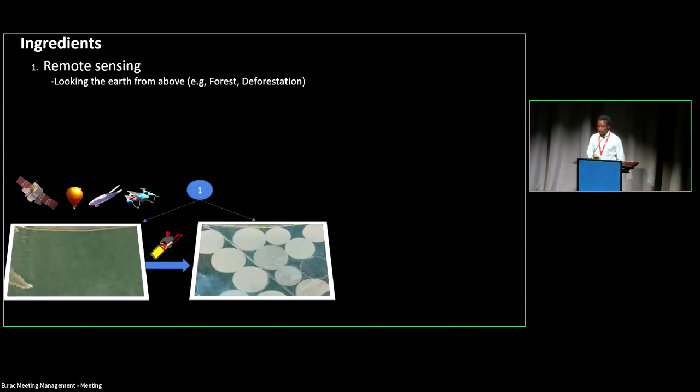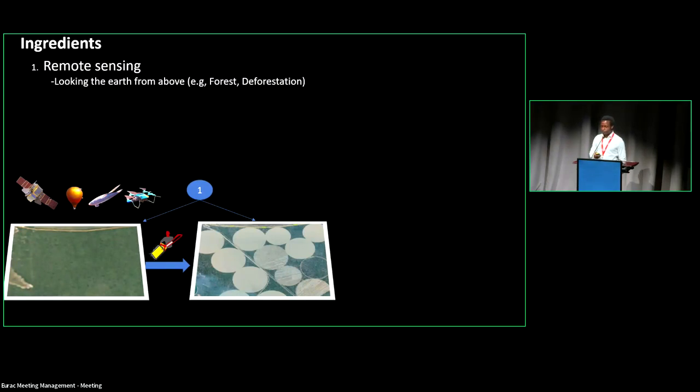Remote sensing from this perspective means looking at the earth from above, of course, can be either by the use of satellite, a balloon, airplane, or drones. From remote sensing perspective, you can get an image of any place on the planet. And specifically here, we're talking about forest monitoring. You can capture a forest at a certain time. If forest is existing, and if changes are happening on the forest, you can also detect it using remote sensing.